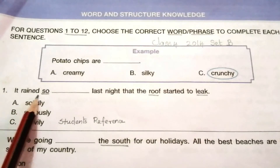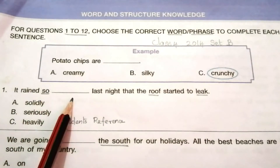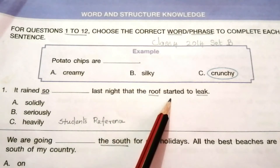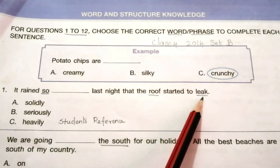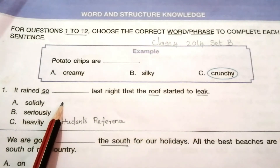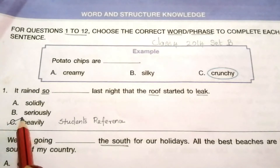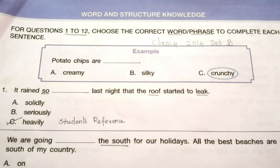Question 1: It rained so ___ last night that the roof started to leak. Options: A) solidly, B) seriously, C) heavily. The answer is C — heavily. It rained so heavily last night that the roof started to leak.